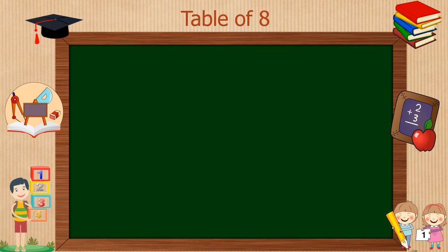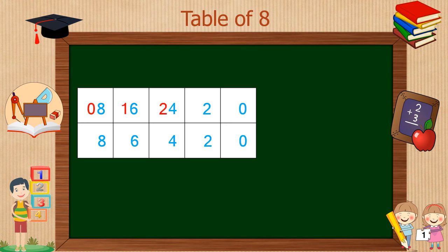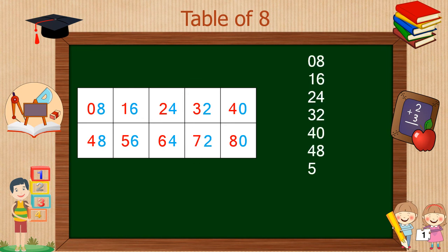Here is another simple trick to write down the table of 8. For this, you require a table containing 5 columns and 2 rows. To write down the one-digit number, write the table of 2 starting from 0 to 8 in both rows, from right to left. To write the tens digit, write numbers 0 to 4 in the first row from left to right, and in the second row write numbers 4 to 8 from left to right. Our 8 table is ready. You can select any one method to write down the tables of 8 and 9, and you can also share with your friends.